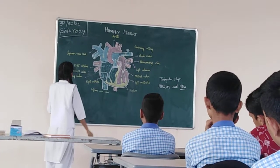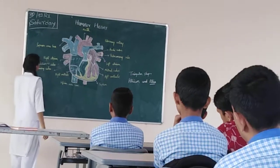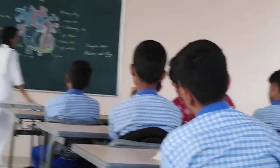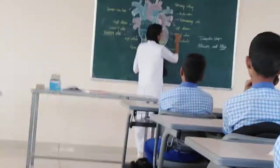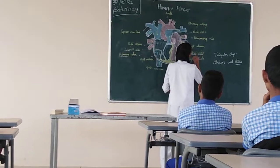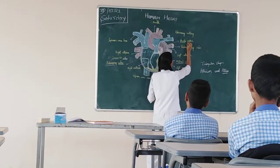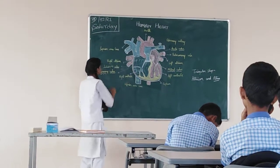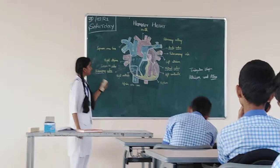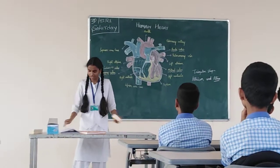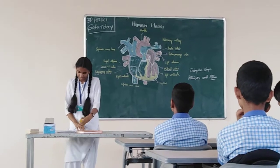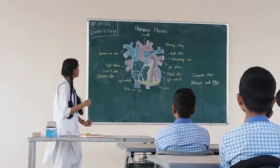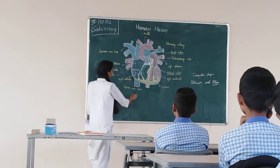There are 4 valves in the heart: the tricuspid wall, the pulmonary wall, the mitral wall, and the aortic wall. We will discuss the functions of these valves in detail. First, let us see how the deoxygenated blood flows.